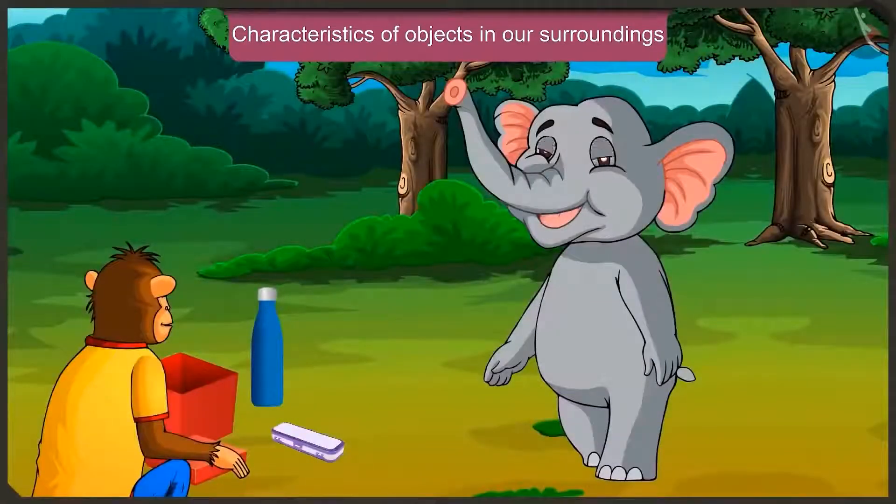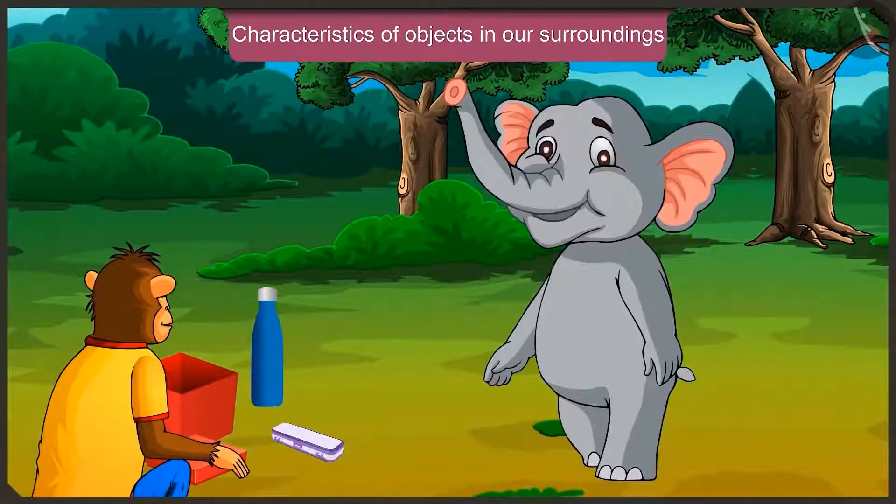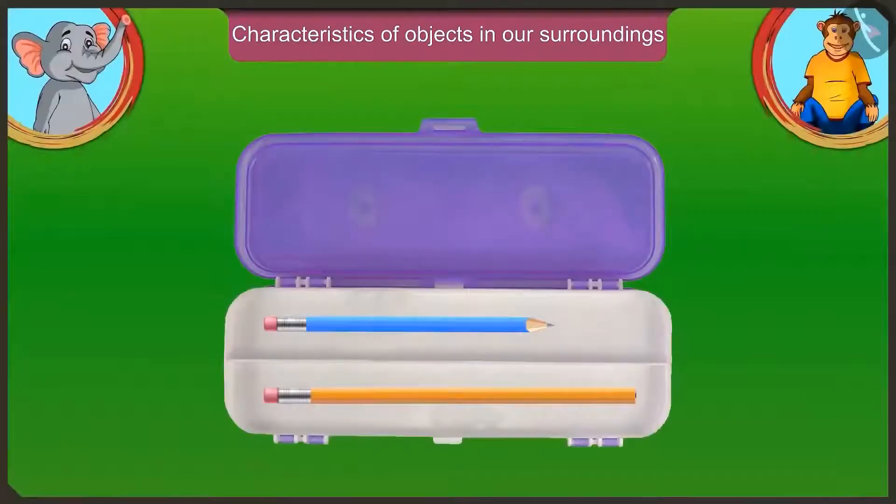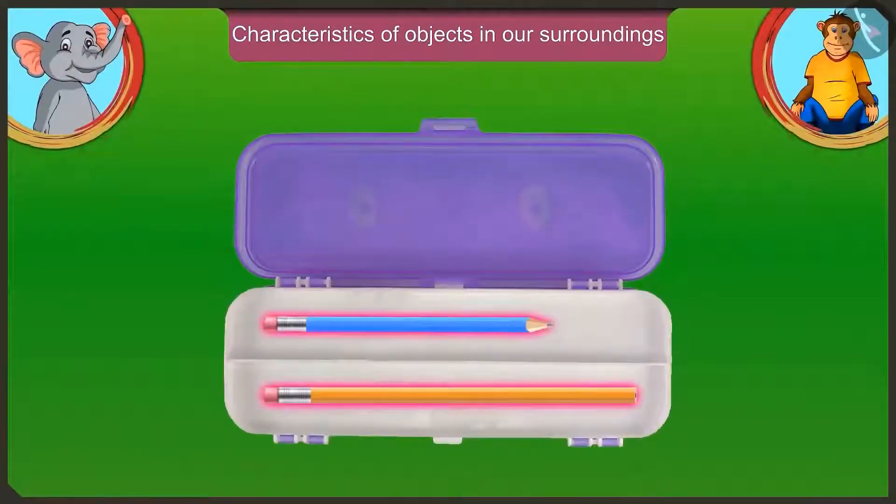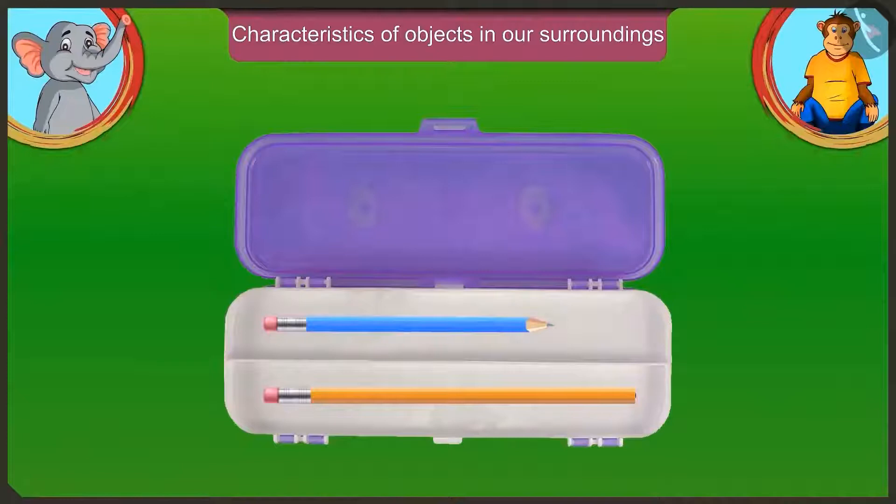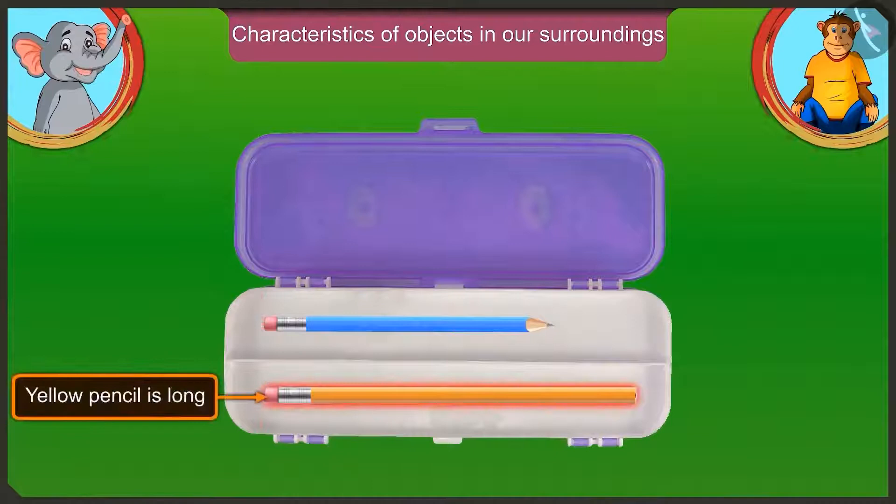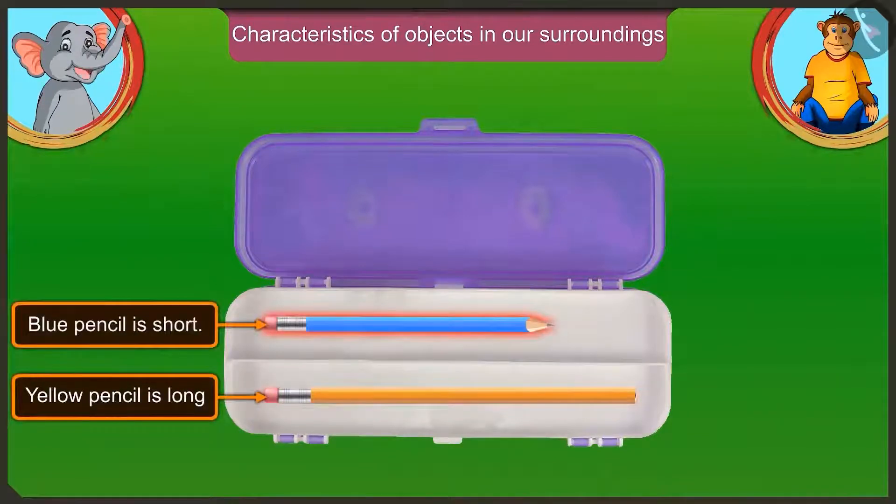What is there in this pencil box? There are two pencils in the pencil box. Look, Jaggu, in this pencil box, the yellow pencil is longer than the blue pencil. Yes, this means that the blue pencil is small. Yes, the yellow pencil is long and the blue pencil is short.